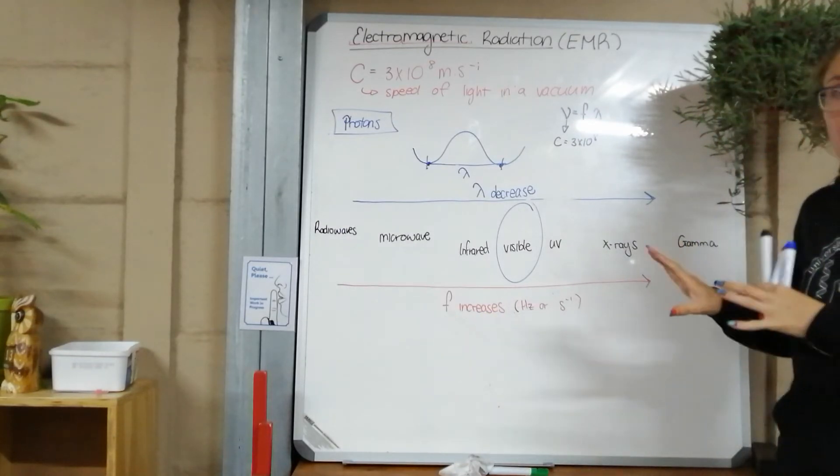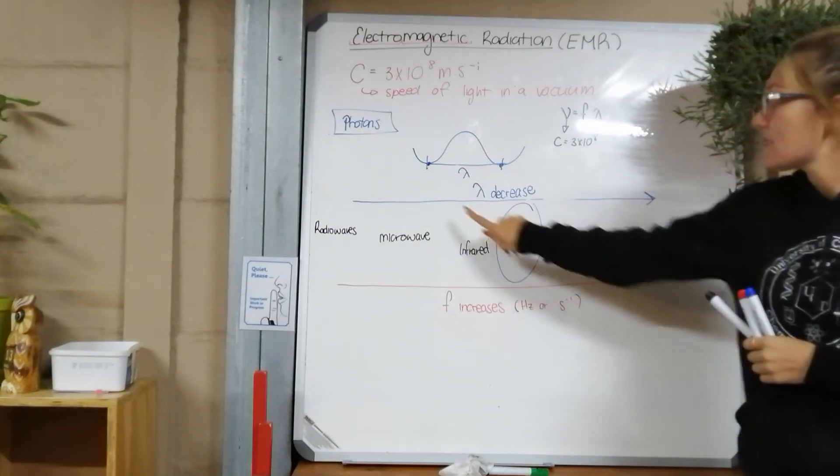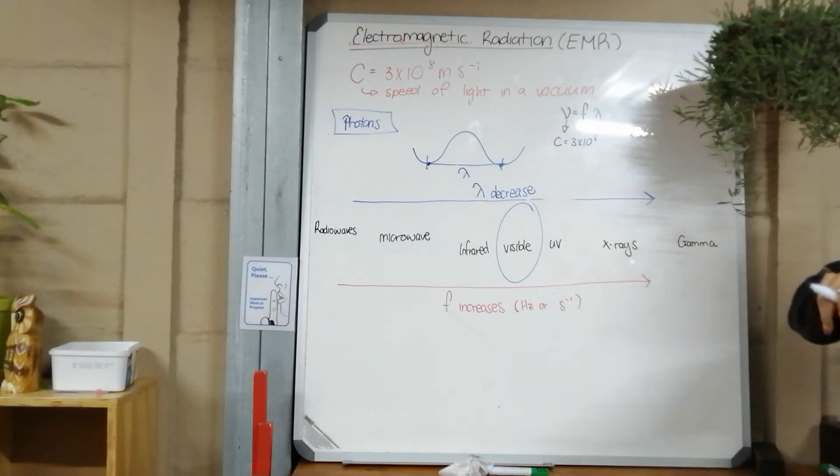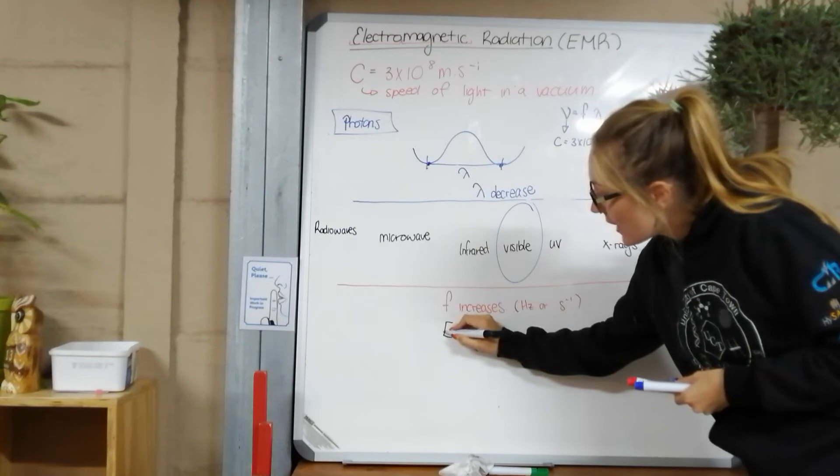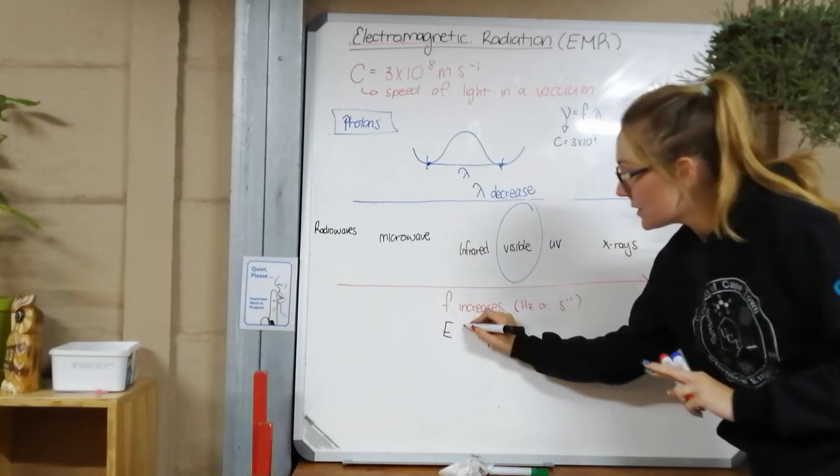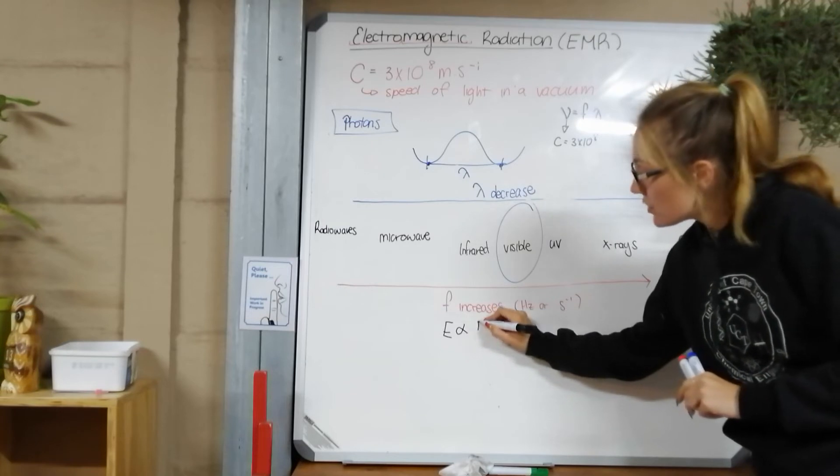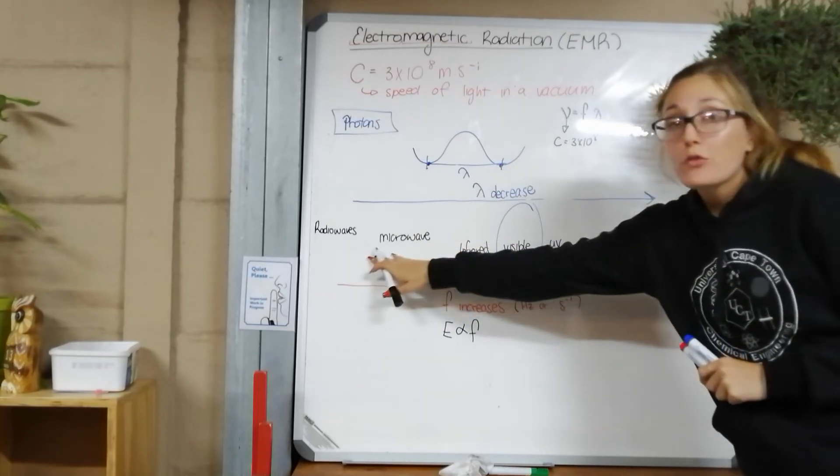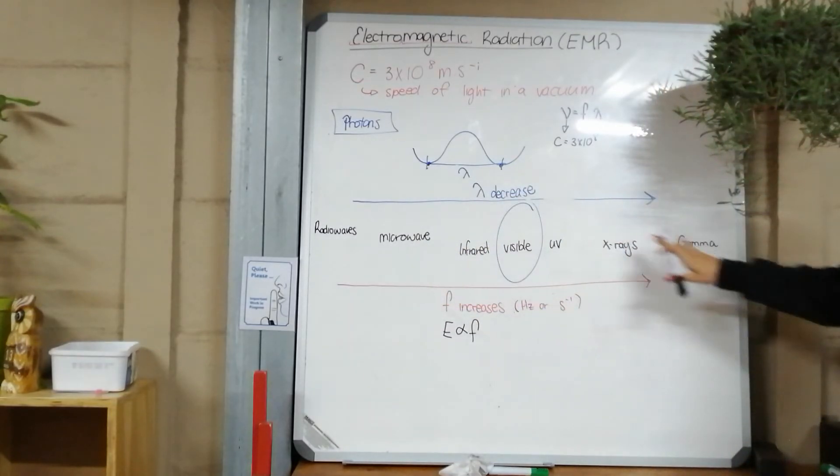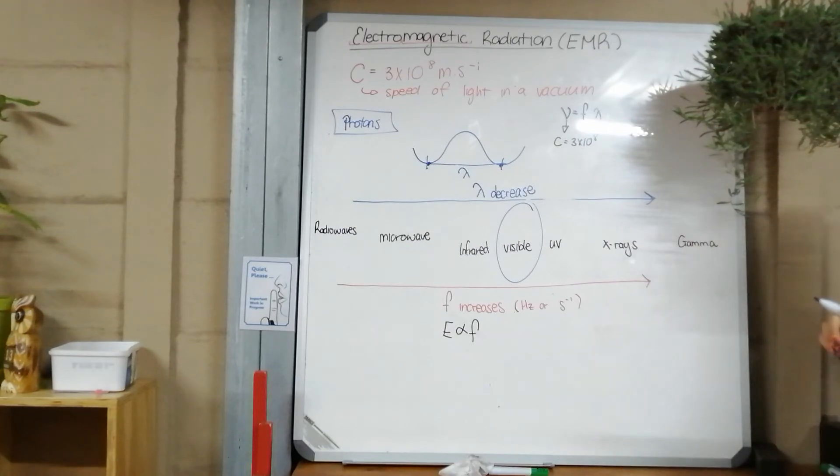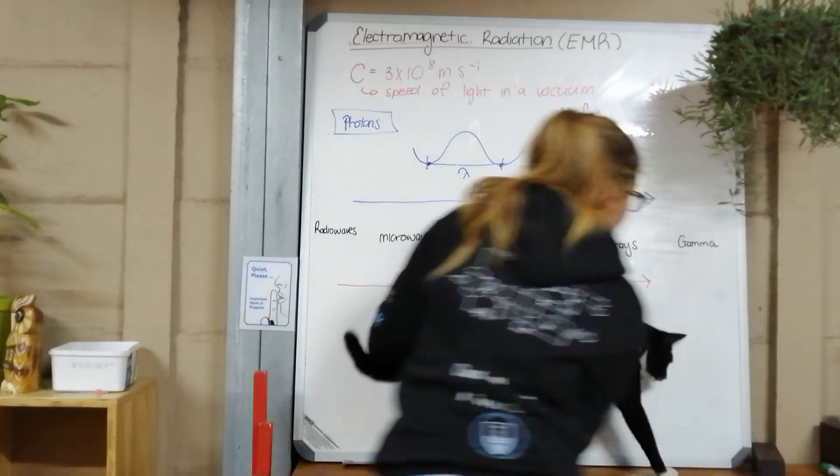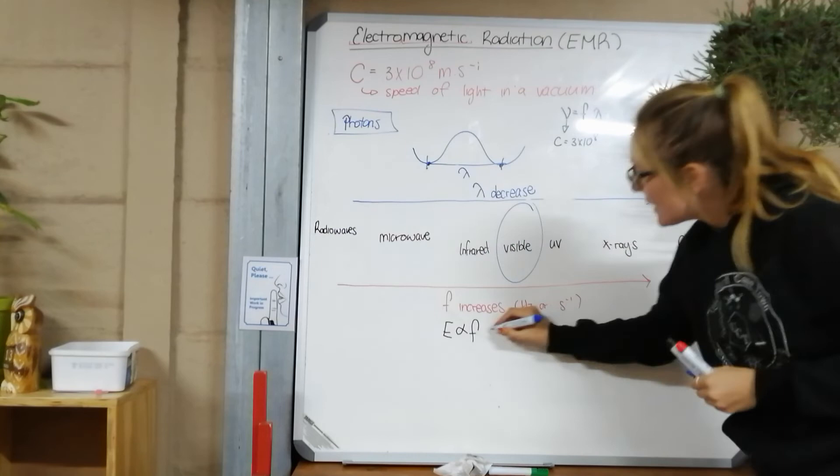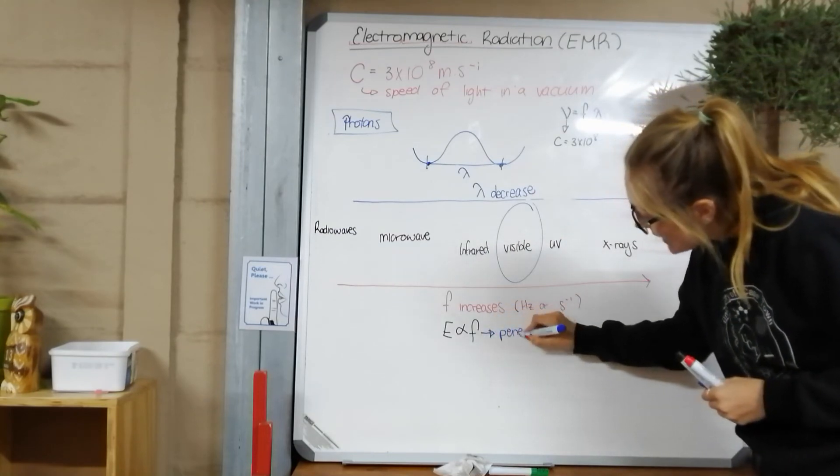Now what I'm doing is not on your diagram, you need to add it please. The fact that the frequency increases and the wavelength decreases. Now, the increasing frequency, that affects our everyday lives because the energy of our electromagnetic radiation is proportional to the frequency. So that means as the frequency increases, as we go from radio waves across to gamma rays, so increased frequency, it means the energy of that electromagnetic radiation also increases. This also means that the penetrating ability increases.